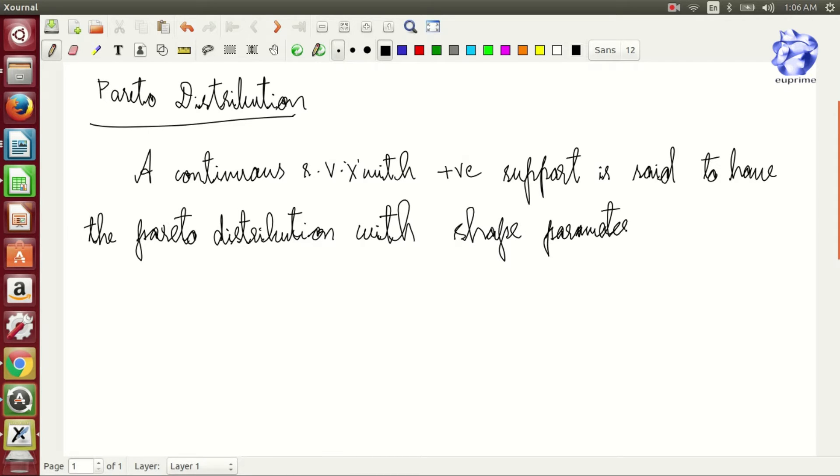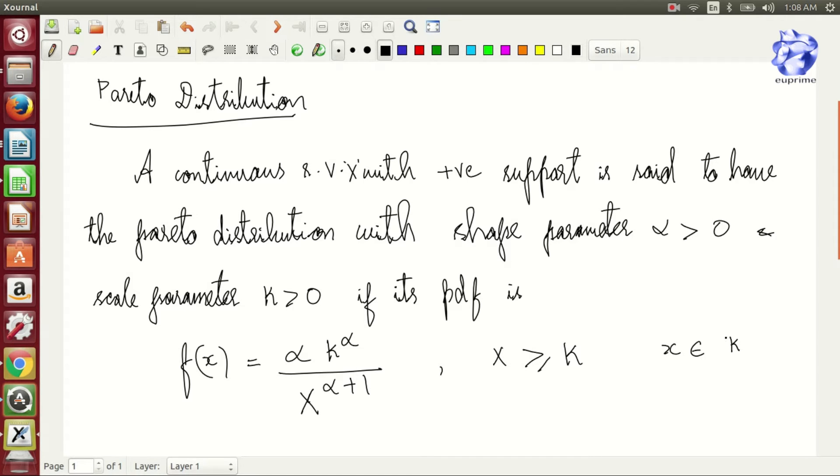with shape parameter alpha greater than zero and scale parameter K greater than zero, if its probability density function is given by f(x) equals alpha times K to the power alpha divided by x to the power alpha plus one, for x greater than or equal to